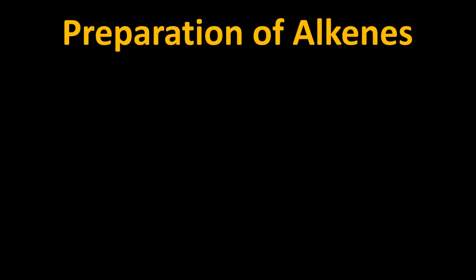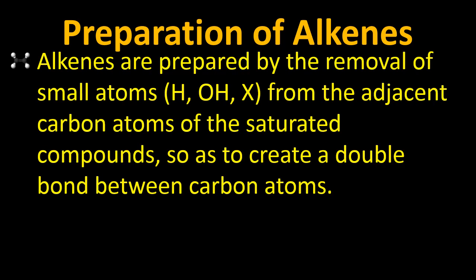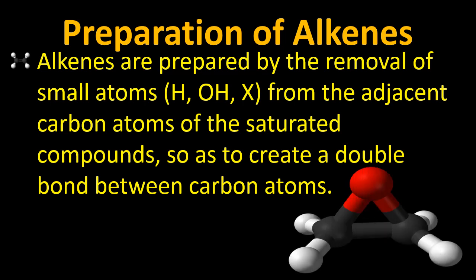Now how can we prepare double bond? How can we prepare alkenes? It's quite easy. We have to add the bond by removing an atom. So alkenes are prepared by the removal of small atoms like hydrogen, hydroxyl or halogen from the adjacent carbon atoms of the saturated compounds to make them unsaturated, so as to create a double bond between carbon atoms.